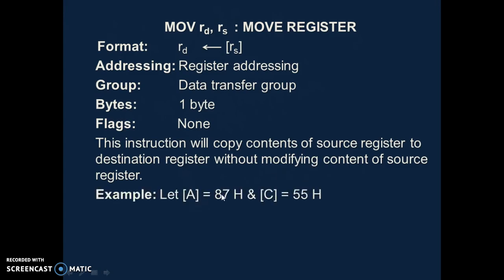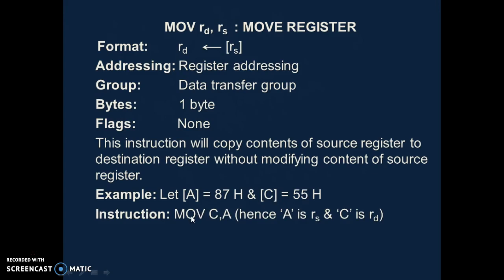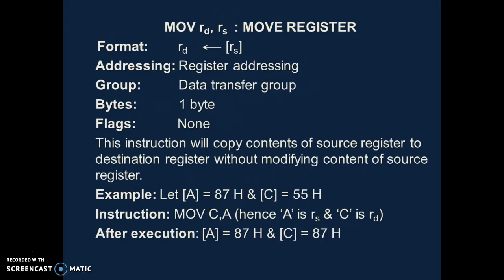Let's understand this with an example. Let the content of the accumulator be 87H — the capital H means 87 is a hexadecimal number. And the content of C register is 55H. The instruction is MOV C, A. Here A is the source register and C is the destination register, meaning data will get copied from the A register (accumulator) to C register. After execution, whatever content was in the accumulator — which is 87H — will get copied into C register, so the content of C register becomes 87H.